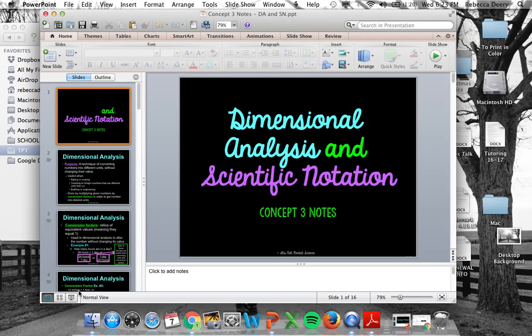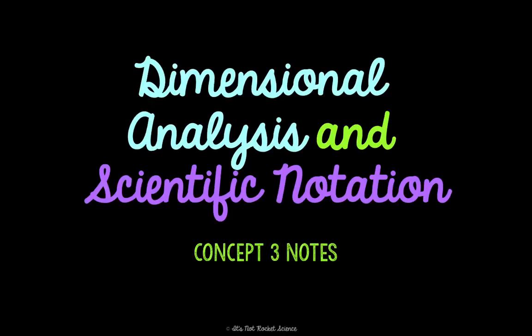We are in concept three of unit one, which is dimensional analysis and scientific notation. So these are two more math skills that you really need to know and understand as we move forward into all of the other content we're going to learn this year. This is just kind of foundational stuff that we need to know. You've already learned temperature conversions and metric conversions. If you did my long way with metric conversions, dimensional analysis is going to be so easy. But if you've been taking shortcuts, now it's going to be harder.